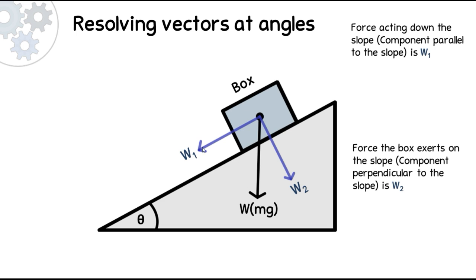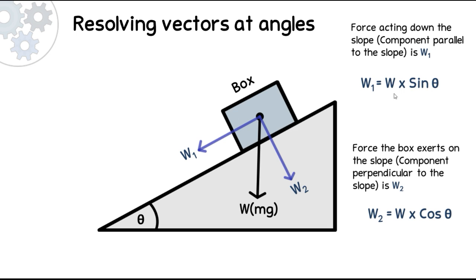I'm going to give you the formulas for how to work out W1 and W2 using theta and the weight of the box, and then show you how to derive those formulas in more detail. To work out W1, you multiply the weight of the box by the sine of angle theta. To work out W2, you multiply the weight by the cosine of theta. Substituting W for mg gives two equivalent formulas.